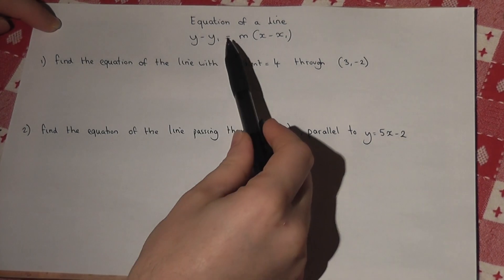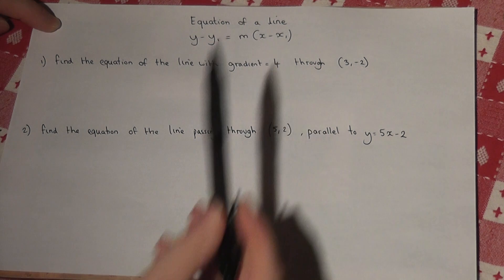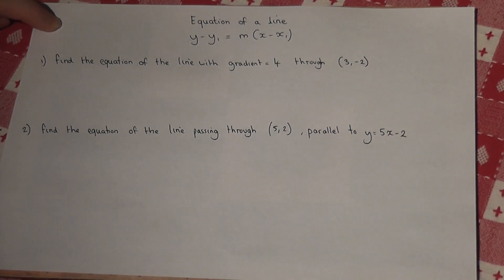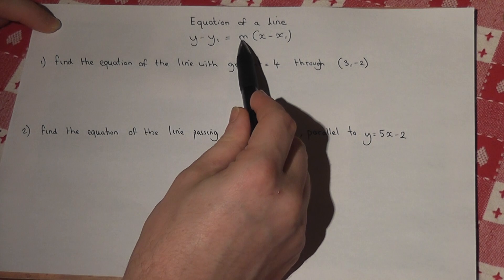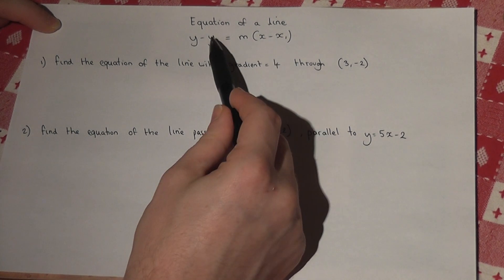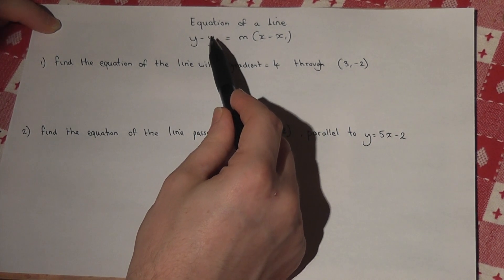y minus y1 equals m times x minus x1 is the general equation of a line, and it allows us to find equations of lines given certain criteria. m is always the gradient, and x1 and y1 are a coordinate on the line.